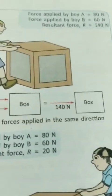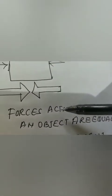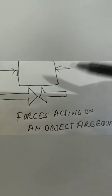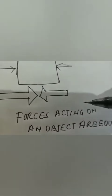Now suppose there is a box and two persons are pushing it from opposite directions. If the box does not move, we can conclude that the forces exerted by the two persons from both sides are equal. Such forces that result in no movement are called balanced forces.